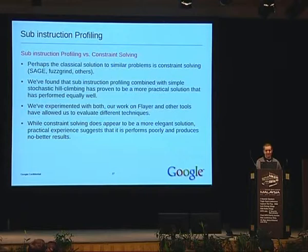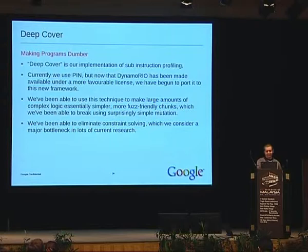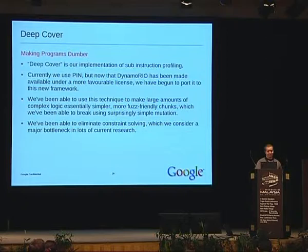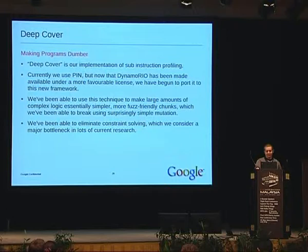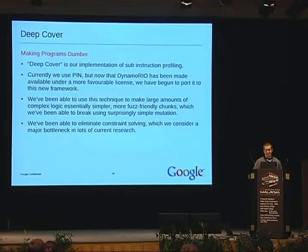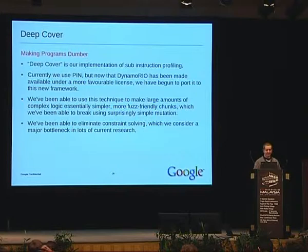My implementation of sub-instruction profiling is called Deep Cover. It's currently using PIN, but now that Dynamo Rio has been released under a favorable BSD license, I plan to port it and make it available under that license. I've been using this technique to make large amounts of logic much simpler and more fuzz-friendly, and we've been able to break some surprisingly complex logic using simple mutation techniques with feedback. I've eliminated constraint solving from my fuzzing, which I've considered a major bottleneck — in lots of current research that plugs constraint solvers into fuzzing, I've found this is holding them back from finding excellent results.